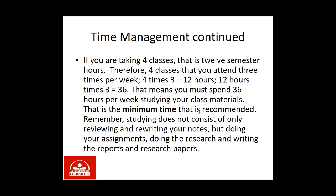If you're taking 4 classes, that's 12 semester hours. Four classes attended 3 times per week equals 12 hours. Twelve hours times 3 is 36. That means you must spend 36 hours per week studying — that's the minimum recommended. Remember, studying includes not only reviewing and writing notes, but doing assignments, research, writing reports and research papers.